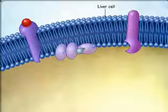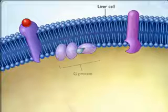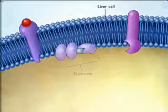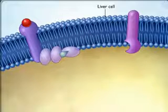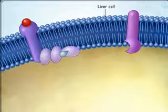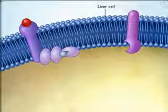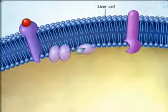When epinephrine binds to beta-adrenergic receptors on the liver cell, G proteins on the inner side of the cell membrane are activated. Each G protein is composed of three subunits, and the binding of epinephrine to its receptor protein causes one of the G protein subunits to dissociate from the other two.